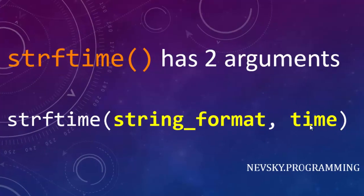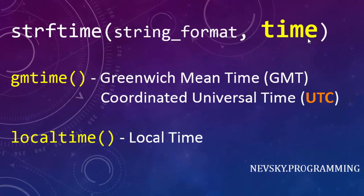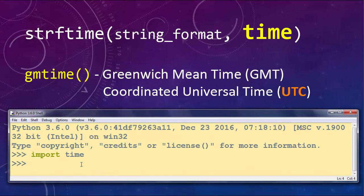First, a few words about the second argument, time. When working with this function we can provide time in two different ways. The first is GMT time, which stands for Greenwich Mean Time, but GMT is now superseded by Coordinated Universal Time, or UTC. The second option is local time. In this video I'm going to use just the local time function to provide the current time.